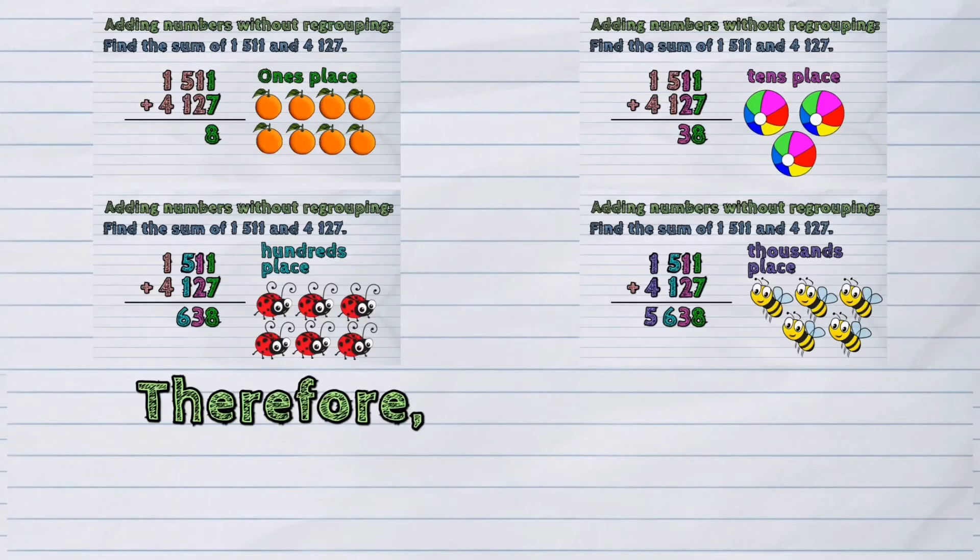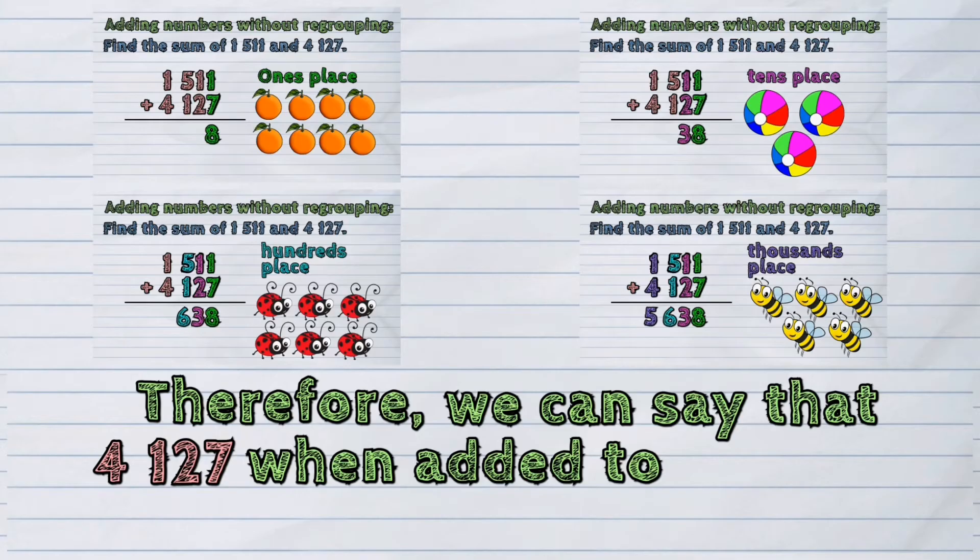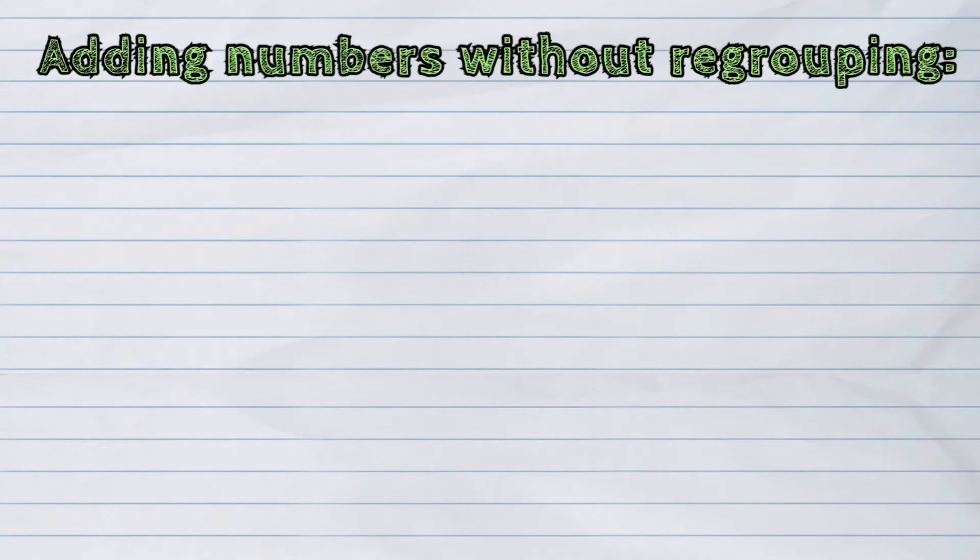Therefore, we can say that 4,127 when added to 1,511 is 5,638. Let us take another example.